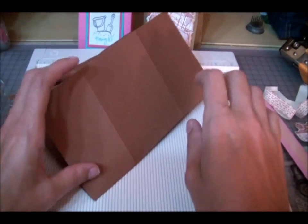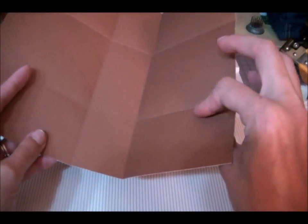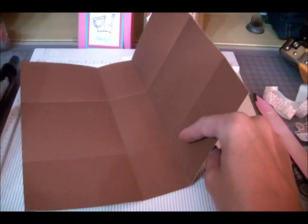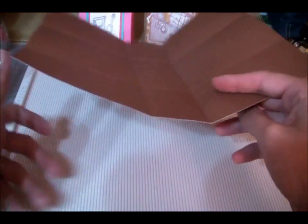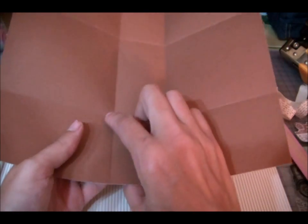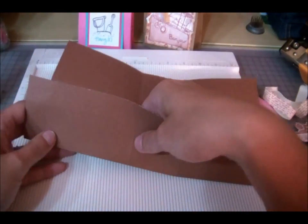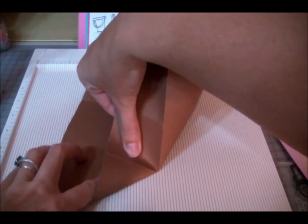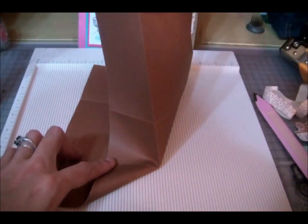Once you've done that, you're going to take this corner, this is somewhat tricky but if you watch you can get it. We're going to take one of the corners right here, this little corner where these come together, and we're going to line it up with the other crease right there, just like that.